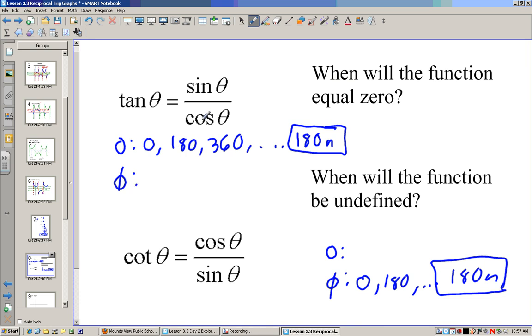Now for this function to be undefined, the cosine has to be zero. So that would be like 90, 270, 540, and so on and so on. So with this we could say it's 90 plus 180 n where n again is an integer. So 90 plus 180 n would give us all of the values where cotangent would equal zero.